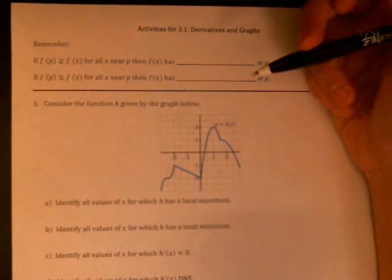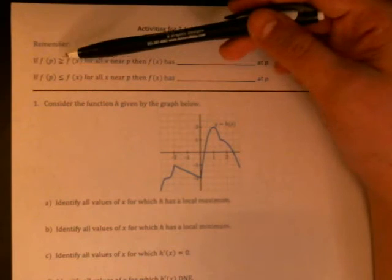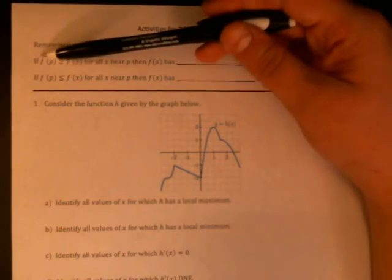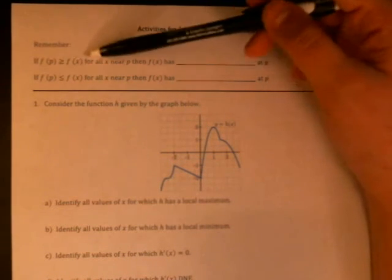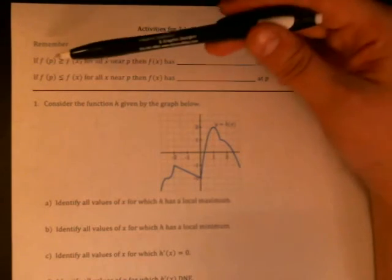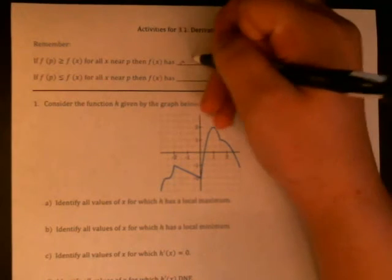Okay so first thing I have just a reminder for you: if f of p is greater than or equal to f of x for all x near p, so this is saying the y value when x equals p is bigger than, at least as big as all the other y values, then f of x has a local minimum at x equals p.